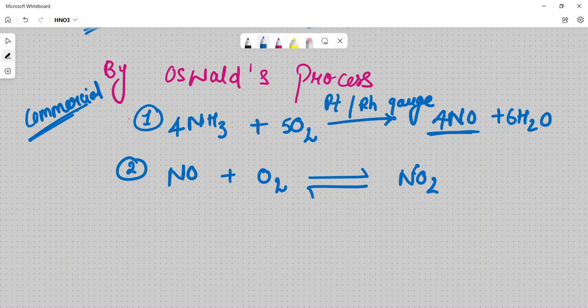If we balance it here, there is 2 oxygen. Here, there is 3 oxygen. So here, there will be 2, here there will be 2. So there will be 4 oxygen, and here there will be 4 oxygen. This is balanced.